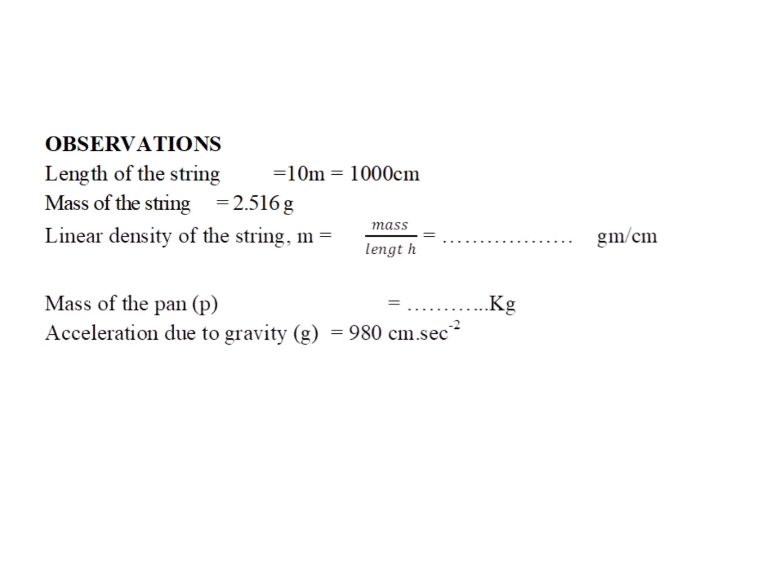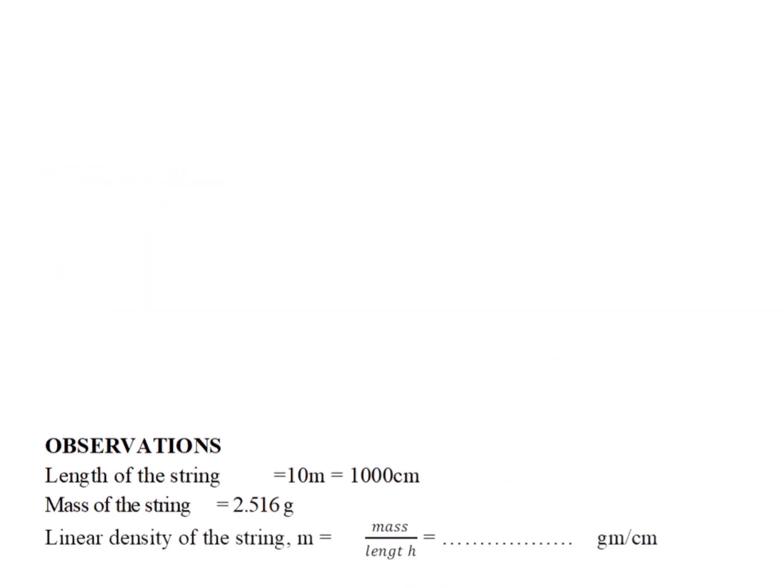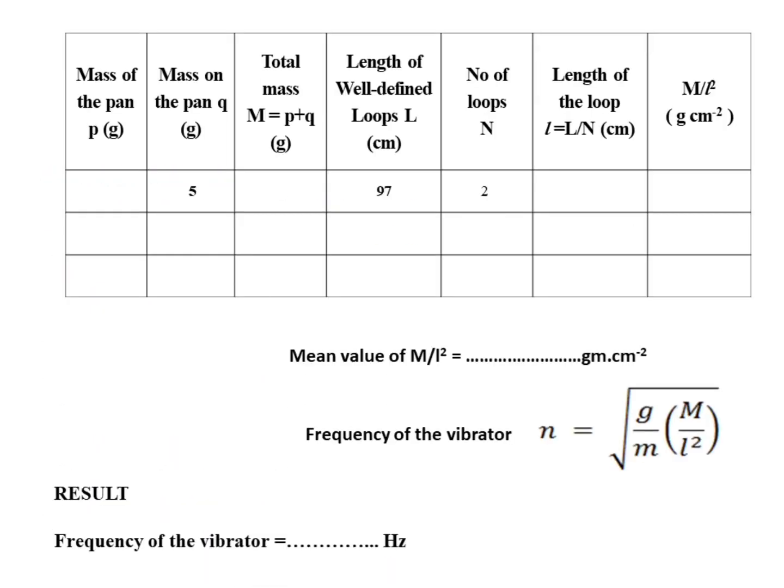The observations are: we have the length of the string and the mass of the string, from which you can calculate the linear density. The mass of the pan has to be measured and the acceleration due to gravity is given. In the tabular column, the mass on the pan Q is 5 grams, so we can calculate the total mass. The length of the well-defined loops is 97 centimeters, the number of loops is 2, from which you calculate the length of one loop and then M by L squared.